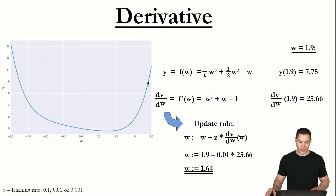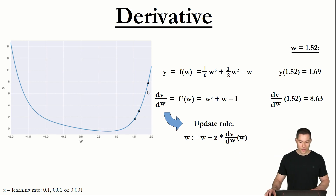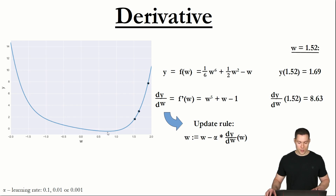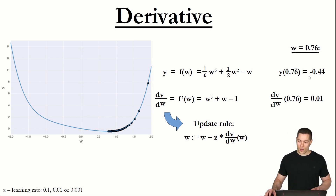Here the slope is only 12.5. If we again use this update rule, the new w will be 1.52, moving from that point to this one. This reveals an advantage of using the derivative in our update rule: if the slope is steep — far from the minimum — we update w by a large amount; if the slope is not so steep — closer to the minimum — we update by a smaller amount. If we do many more iterations of this update rule, we get step by step closer to the minimum, and at some point we stop. Again, we get an approximation for w where our function is minimized.